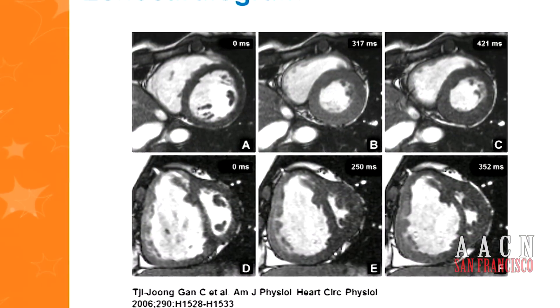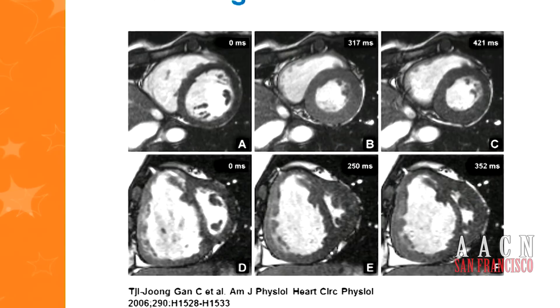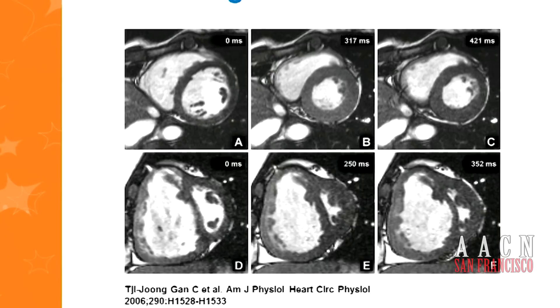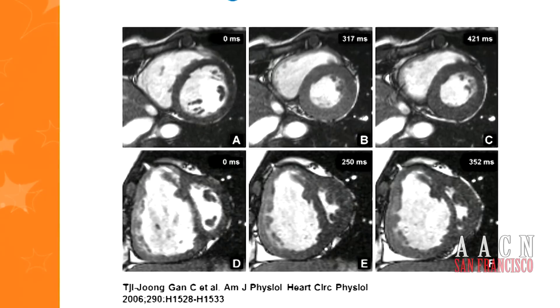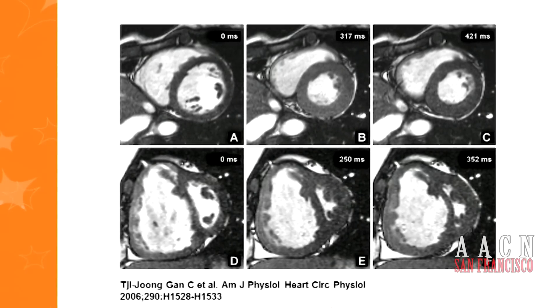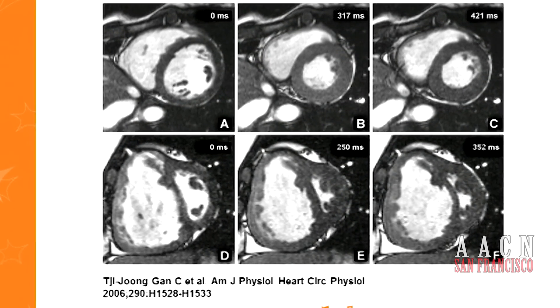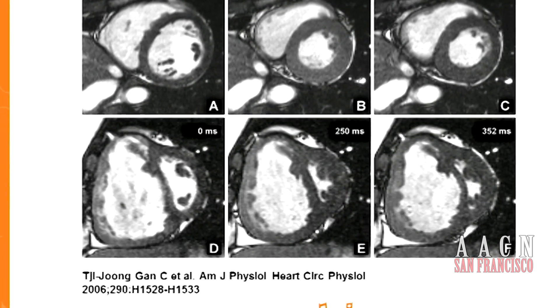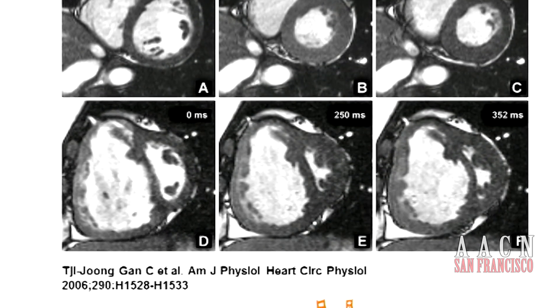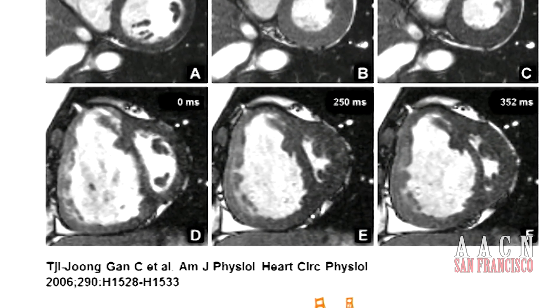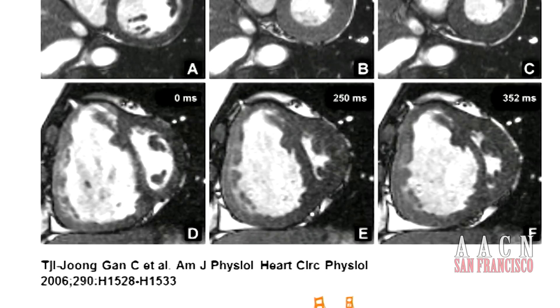This is a short-axis echo. The top three images show a normal heart in systole — the left ventricle is round, and the right ventricle wraps around it. The left ventricle has much more muscle because it squeezes against systemic vascular resistance; the right ventricle is built to squeeze against very low pressures. In severe pulmonary hypertension the right ventricle is much bigger, hypertrophied, and actually impedes left ventricular filling. So there's a problem with right ventricular output and also inadequate left ventricular cardiac output.